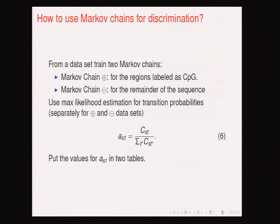A student asks why people use the Bayesian approach if they can just set probabilities to frequency. The answer: the Bayesian approach incorporates prior knowledge. For example, if you want to estimate die probabilities with only three trials, maximum likelihood will give at least three probabilities estimated as zero — which you know is wrong, because you expect probabilities around 1/6 for each side. Therefore, the Bayesian approach is advisable when you have limited data and prior knowledge.